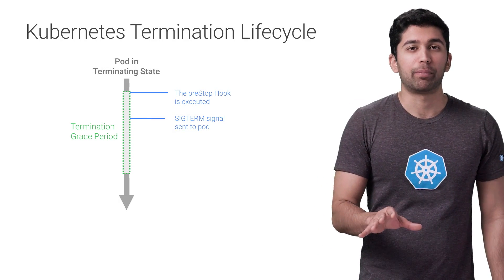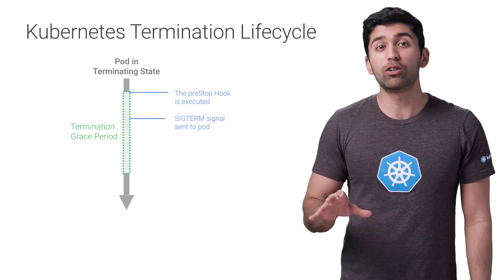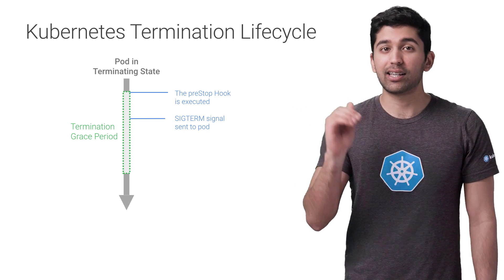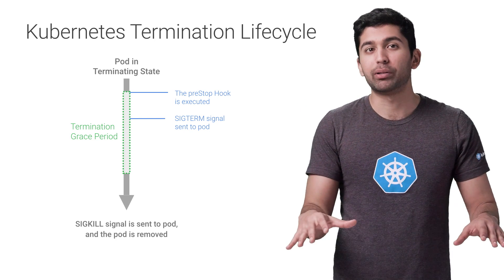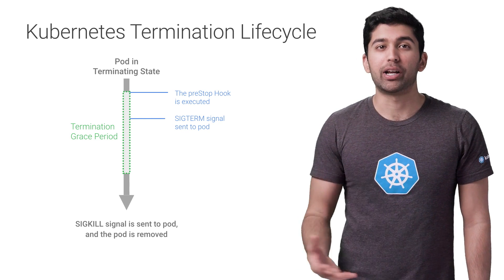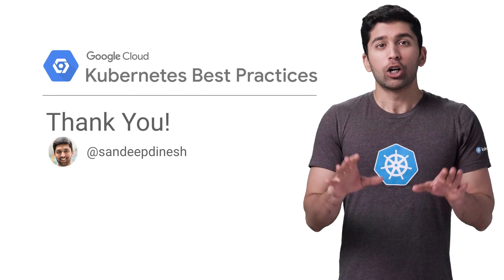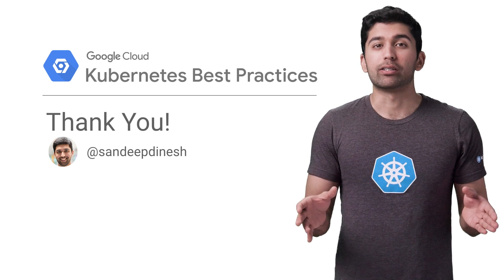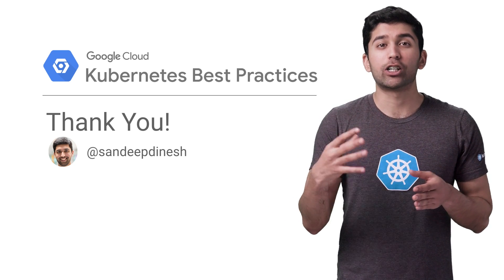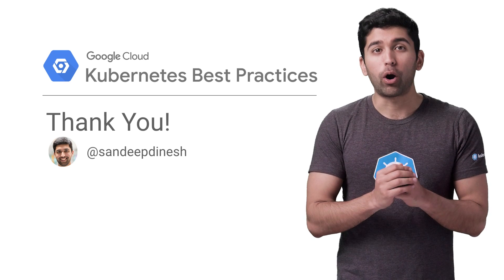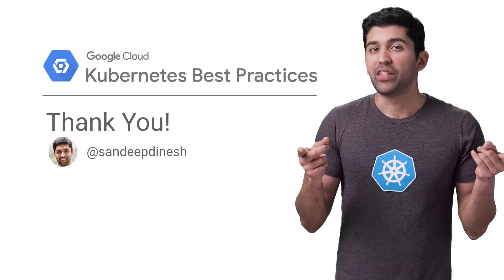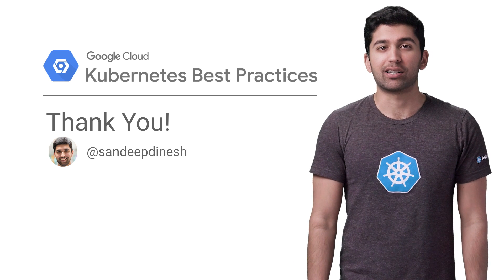If the containers are still running after the grace period, they are sent the SIGKILL signal and then forcibly removed. At this point, Kubernetes cleans up all the objects as well. Kubernetes terminates pods for many reasons, and making sure that your application handles these terminations gracefully is core to creating a stable service. I'll see you on the next episode of Kubernetes Best Practices.